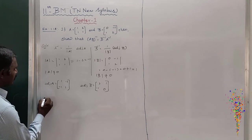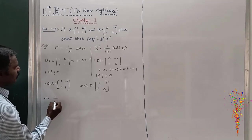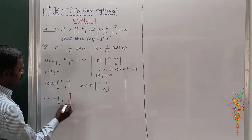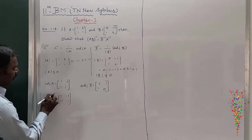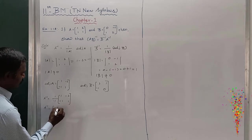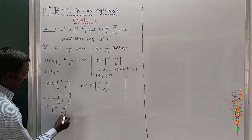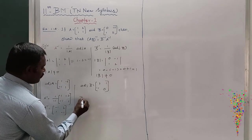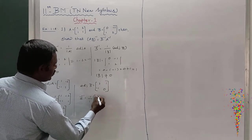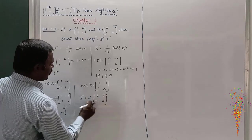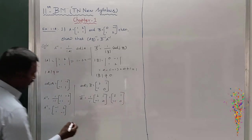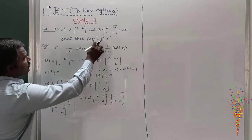Next, A inverse equals 1 by modulus of A into adjoint A. Since modulus of A is minus 1, dividing by minus 1 gives A inverse equals [-1, 2; 1, -1]. And B inverse equals 1 by modulus of B into adjoint of B. Since modulus of B is 1, B inverse equals [2, 1; -1, 0].